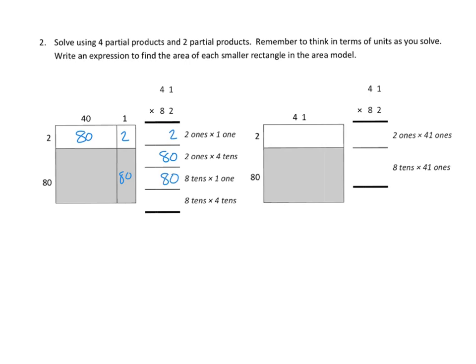And finally, our last piece, we had 8 tenths times 4 tenths. And 8 tenths times 4 tenths, well, 8 times 4 is 32. And 10 times 10 is 100, so that's 3,200. We've got that up here, 3,200.